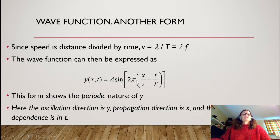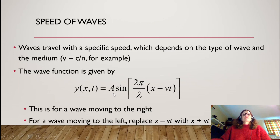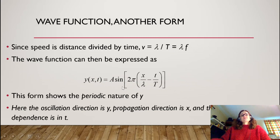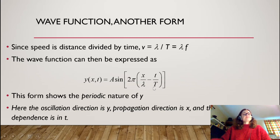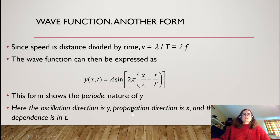Going back to the form A sin(2π/λ · (x − vt)), if we pull the lambda inside and distribute, we get A sin(2π · x/λ − 2π · vt/λ). Since v/λ equals the frequency, or 1/T, we arrive at y = A sin(2πx/λ − 2πt/T). This form shows the periodic nature clearly: the oscillation direction is y, the propagation direction is x, and the time dependence is in t. The values for y vary between +A and −A, bobbing up and down as the oscillation propagates to the right at speed v.